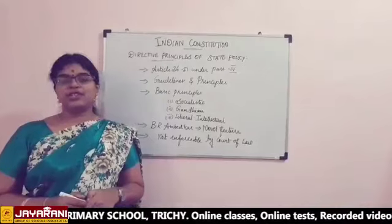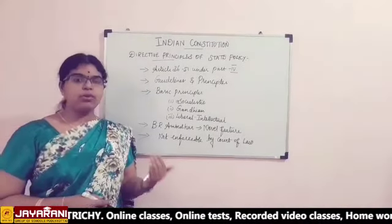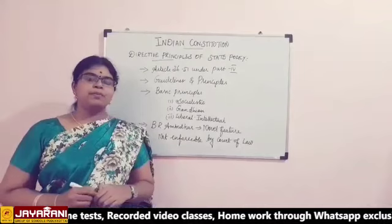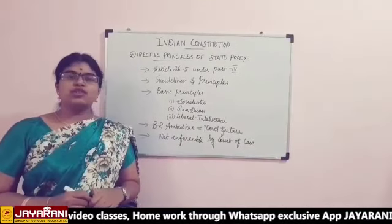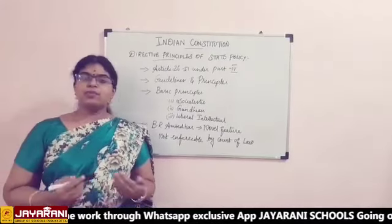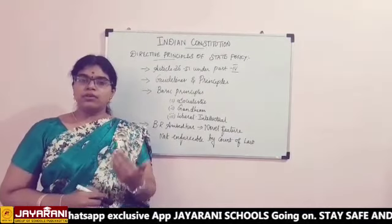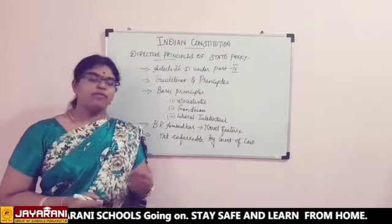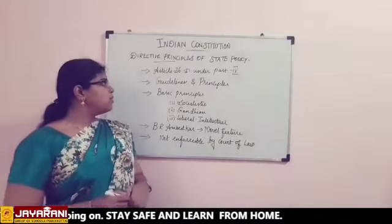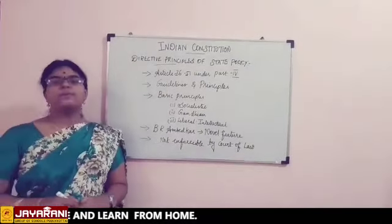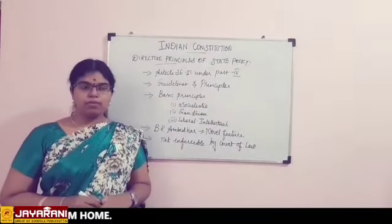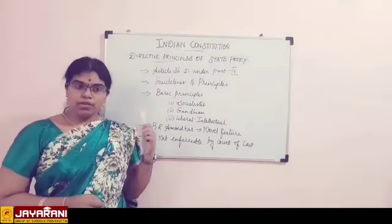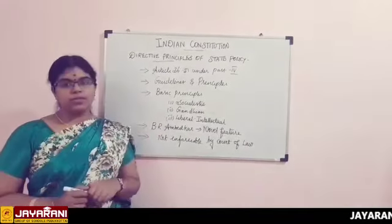The Gandhian principles help develop the nation from the grassroots level — that is, from rural to urban. The liberal intellectual principle holds that citizens should get rid of superstitious beliefs and develop scientific temper for the progress of the country. These principles help promote the social welfare of the people, and the government is duty-bound to implement them while making laws.